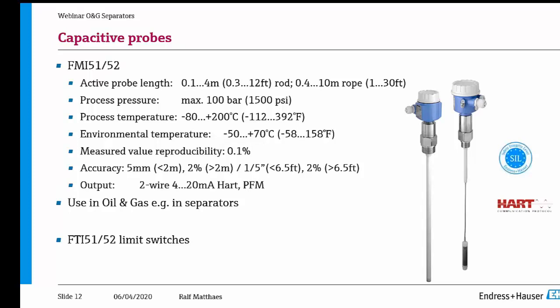Process temperature from minus 80 to 200 degrees C, and environmental temperature range from minus 50 to plus 70 degrees C. Measured value reproducibility is 0.1%, and accuracy is typically 5 mm in a range of less than 2 meters, or 2% if the range is larger than 2 meters. Output is given as 4–20 mA or PFM — pulse frequency modulation — a very common technology used in separation processes.